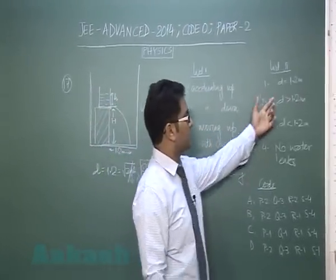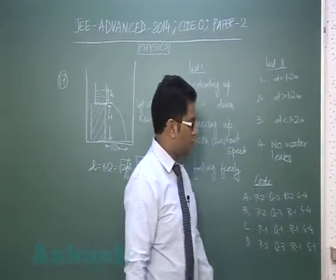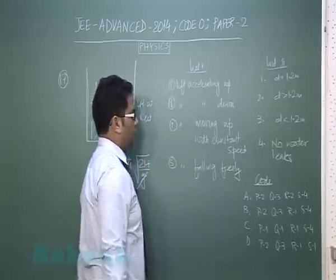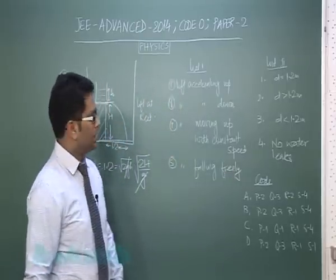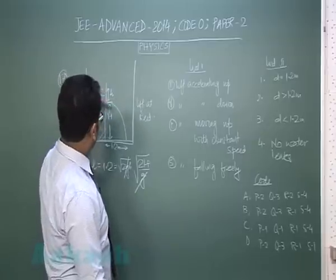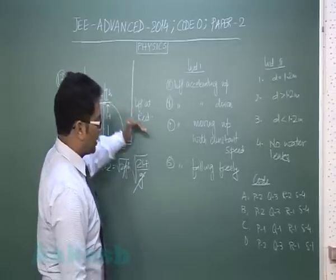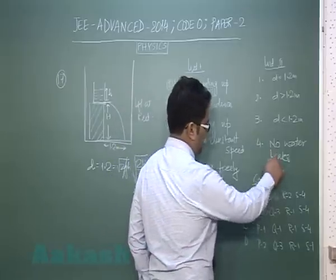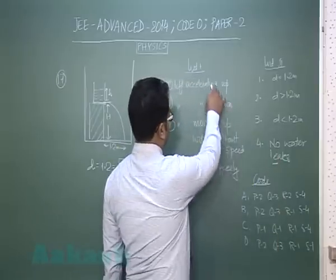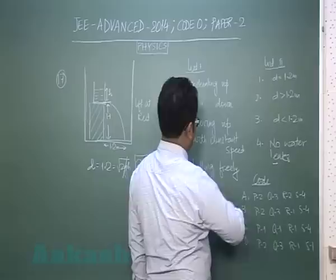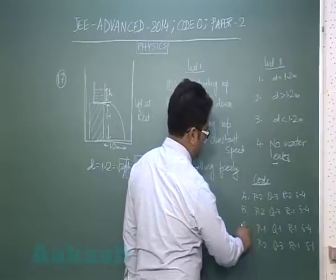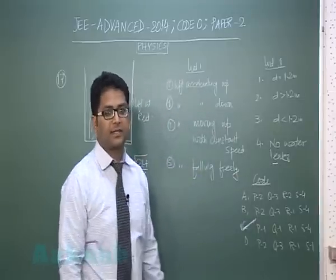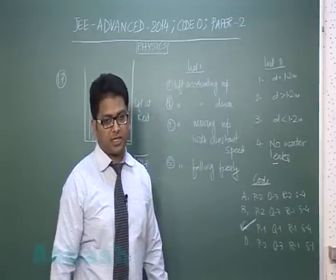When the lift falls freely, quite obviously there would be no gravitational force to push the liquid out, so water would not leak outside. For P, Q, R the key is 1, and for S it's 4. Therefore code C is the correct answer.